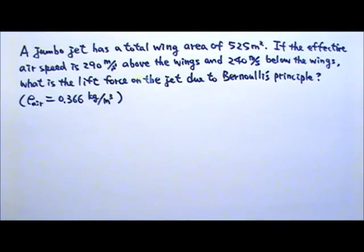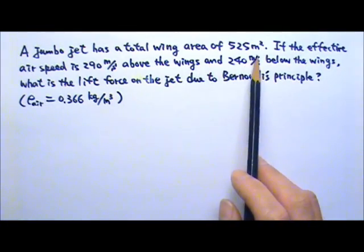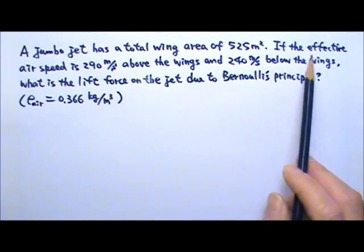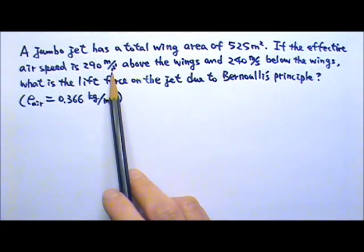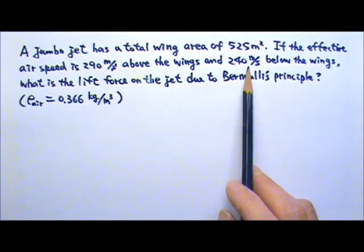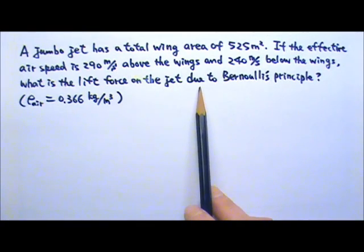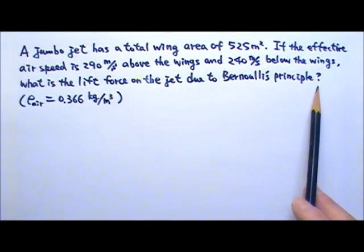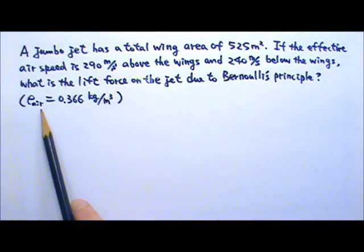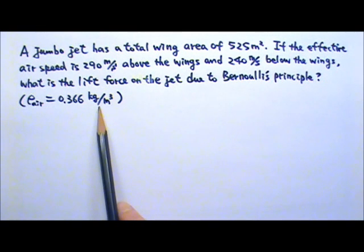Now let's try a problem. A jumbo jet has a total wing area of 525 meters squared. If the effective air speed is 290 meters per second above the wings and 240 meters per second below the wings, what is the lift force on the jet due to Bernoulli's principle? The density of air at the jet's altitude of 11,000 meters is about 0.366 kilograms per meter cubed.